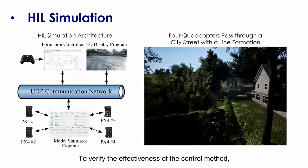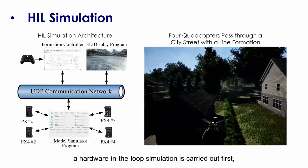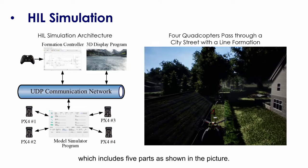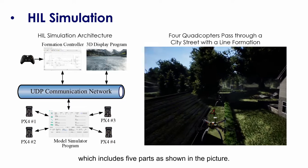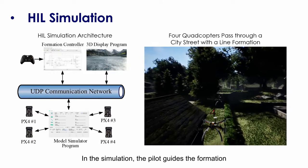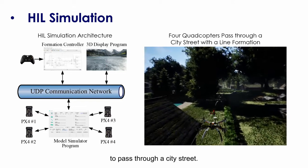To verify the effectiveness of the control method, the hardware-in-the-loop simulation is carried out first, which includes five parts as shown in the picture. In the simulation, the pilot guides the formation to pass through a city street.